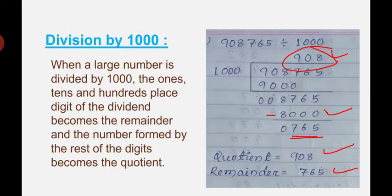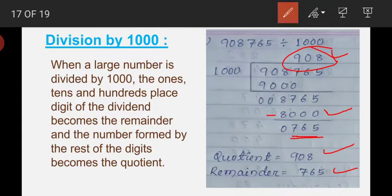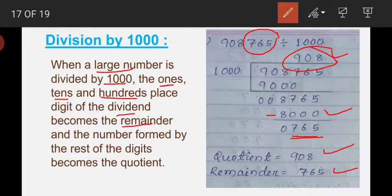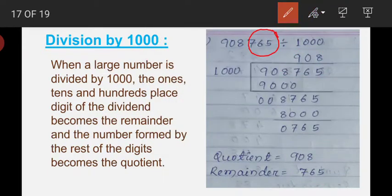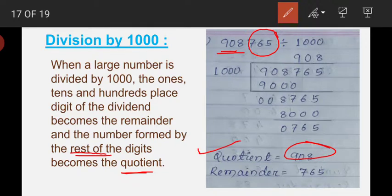If you are just asked to find the quotient and remainder without doing full division: when a large number is divided by 1000, the digits in the ones, tens, and hundreds place of the dividend become the remainder. Here those digits are 765, so the remainder is 765. The number formed by the rest of the digits becomes the quotient, so 98 is the quotient. In this way you can find the quotient and remainder when dividing by 10, 100, or 1000.